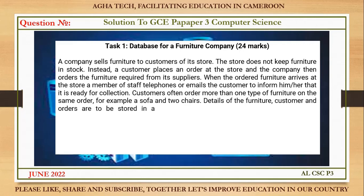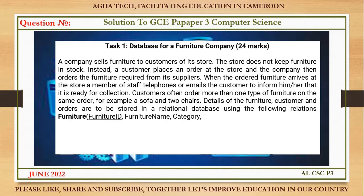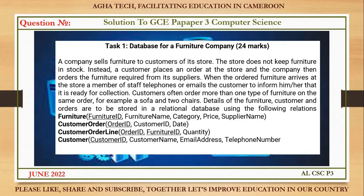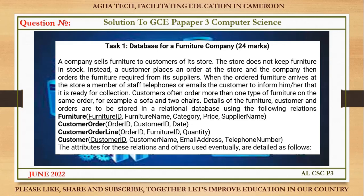Details of the furniture, customer, and order are to be stored in a relational database using the following relations: Furniture (FurnitureID, FurnitureName, Category, Price, SupplierName), CustomerOrder (OrderID, CustomerID, Date), CustomerOrderLine (OrderID, FurnitureID, Quantity), and Customer (CustomerID, CustomerName, EmailAddress, TelephoneNumber).